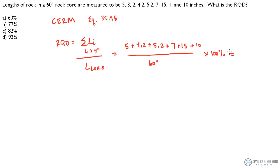That's what's given over here. So punch that in your calculator. What do you get? You get 77%. That is the RQD. And the answer to this guy is B.